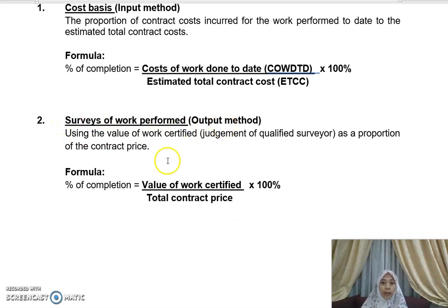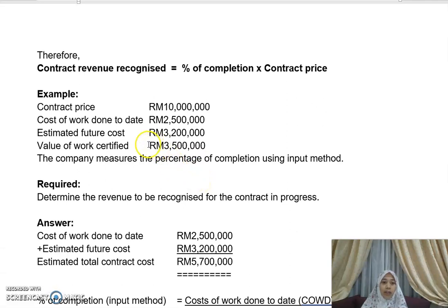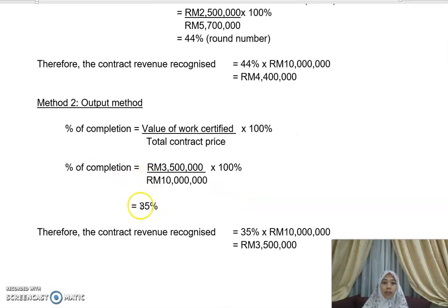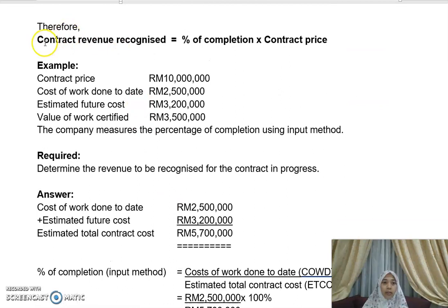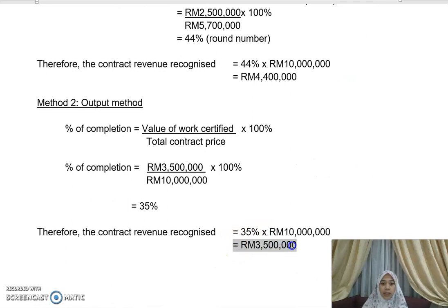Using method two — the survey of work performed or output method — the percentage of completion = value of work certified divided by total contract price. Value of work certified is 3.5 million; contract price is 10 million. So percentage of completion = 35%. Contract revenue recognized = 35% × 10 million = 3.5 million.